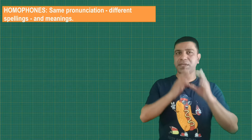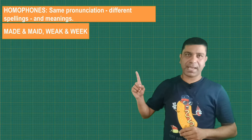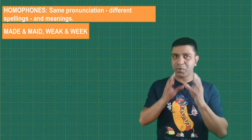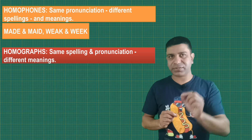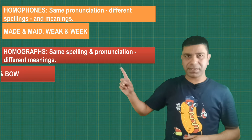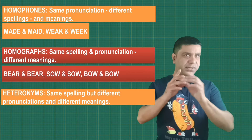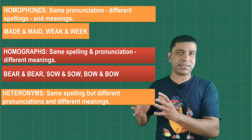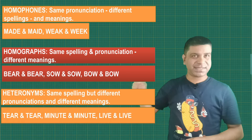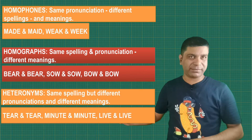To recap: homophones have the same pronunciation but are spelt differently and have different meanings — for example, maid/made, weak/week. Homographs have the same spelling and same pronunciation but different meanings — for example, bear/bear, sow/sow, bow/bow. But heteronyms have the same spelling but different pronunciations and different meanings — for example, tear/tear, minute/minute, live/live, etc.